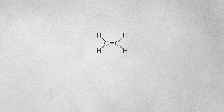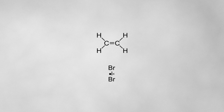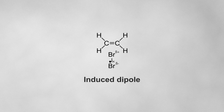So where is the electrophile? What happens is, as the bromine molecule approaches the ethene molecule, the electrons in the double bond repel the electrons in the bromine-bromine bond, resulting in a delta plus on the closest bromine atom and a delta minus on the furthest bromine atom. We call this an induced dipole. This delta plus bromine can attract electrons, so it acts as the electrophile.